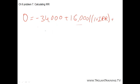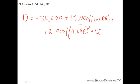Then plus the cash flow for the second year divided by one plus the internal rate of return to the second power. And plus $15,000, which is the cash flow for the third year, divided by one plus the internal rate of return to the third power.